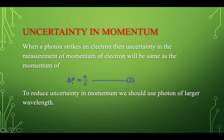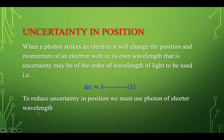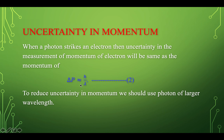On the other hand, to reduce uncertainty in momentum, we should use a photon of larger wavelength. This demonstrates the uncertainty principle: position and momentum cannot be measured accurately at the same time.